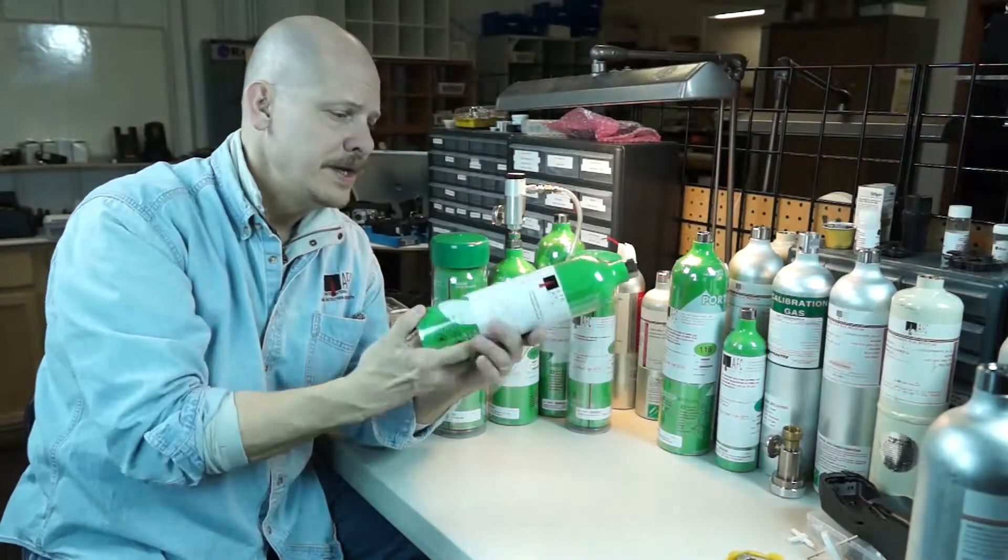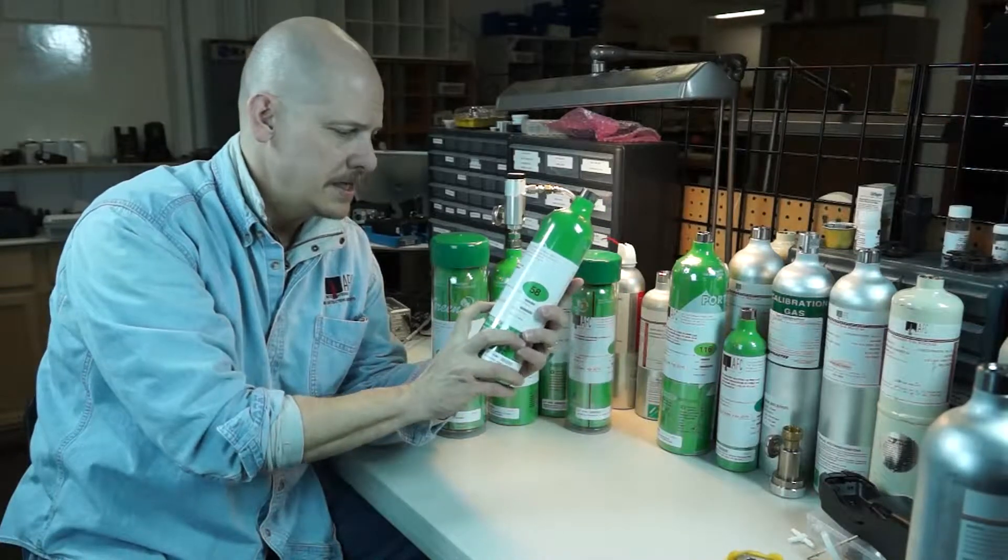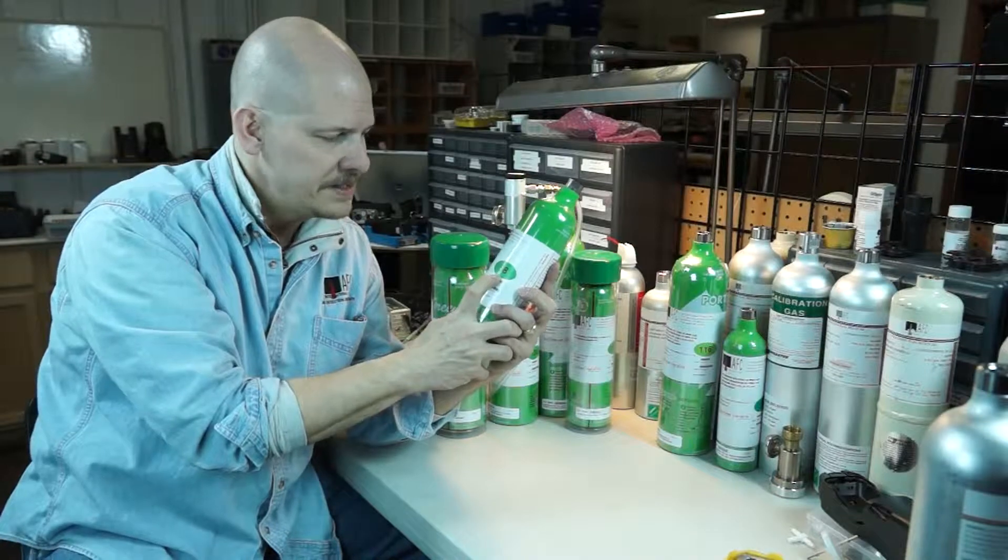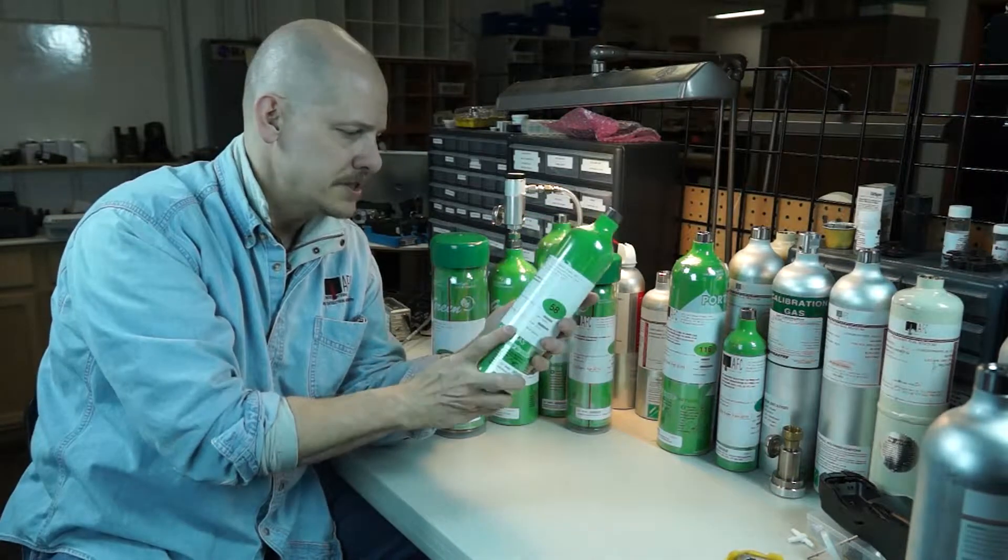The green cylinder has a label on it, and that label has an expiration date on it. It also has the amount of liters. This has got 58 liters in it in this particular size.